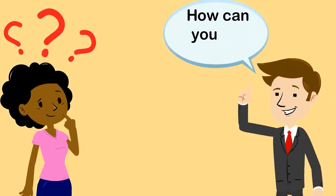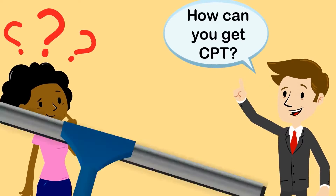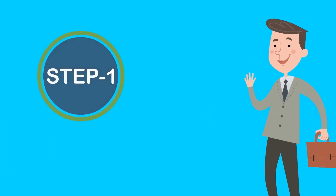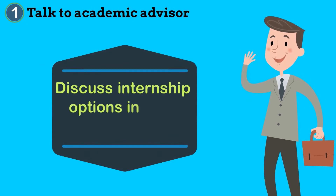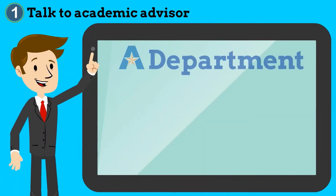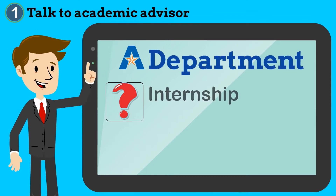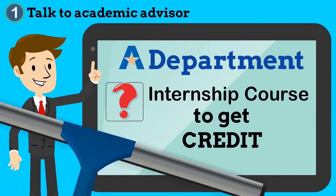So how can you get CPT? Let's walk through the steps together. The first step is to talk to your academic advisor to discuss internship options in your degree program. You'll need to find out if your department will allow you to enroll in an internship course to get credit for your practicum.